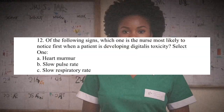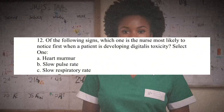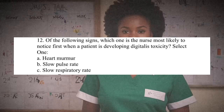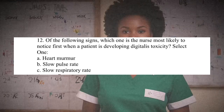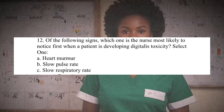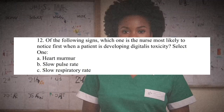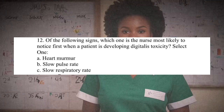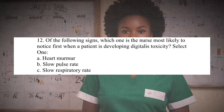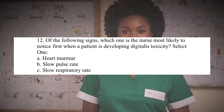Question 12: Of the following signs, which one is the nurse most likely to notice first when a patient is developing digitalis toxicity? A. Heart murmur. B. Slow pulse rate. C. Slow respiratory rate. Answer: B. Rationale: Digitalis toxicity often presents initially with cardiac symptoms, particularly bradycardia — a slow pulse rate. The nurse is most likely to notice a slow pulse rate first because digitalis (digoxin) increases vagal tone and decreases heart rate. Heart murmurs and changes in respiratory rate are less common initial indicators of digitalis toxicity.